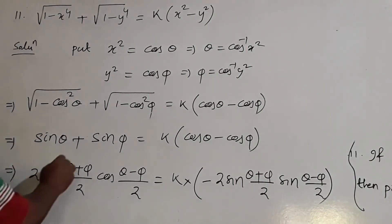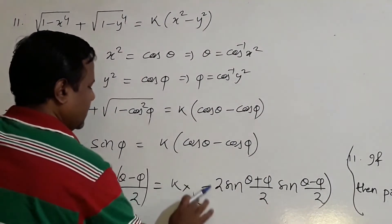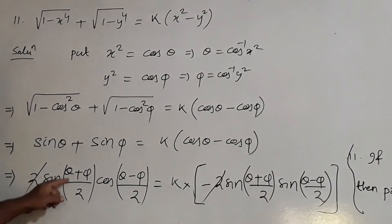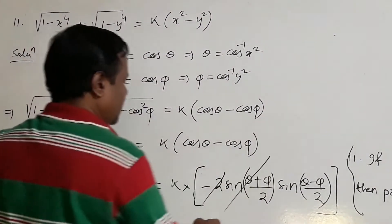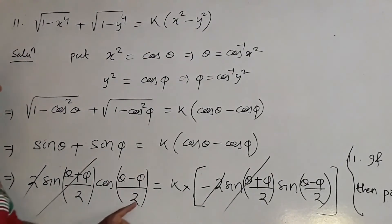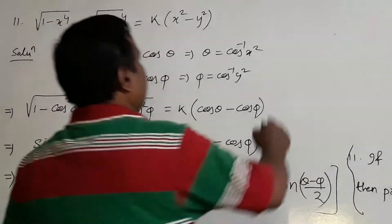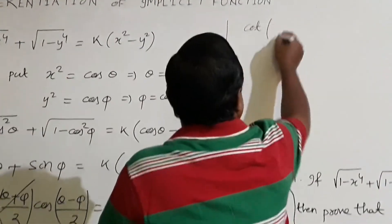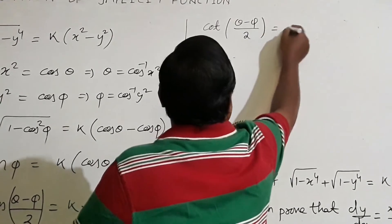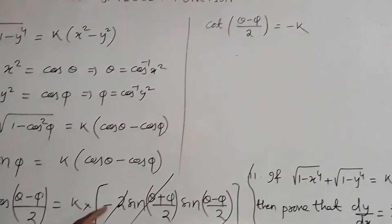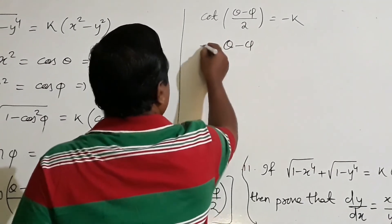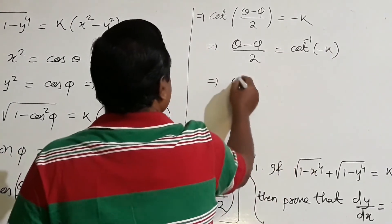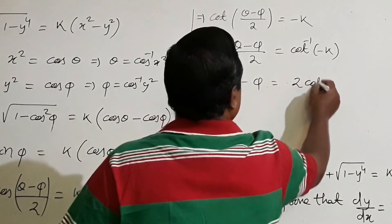After cancelling the factor 2 sin((θ+φ)/2) from both sides: cos((θ−φ)/2) / sin((θ−φ)/2) = −k, which is cot((θ−φ)/2) = −k. Therefore (θ−φ)/2 = cot⁻¹(−k), giving θ − φ = 2 cot⁻¹(−k).